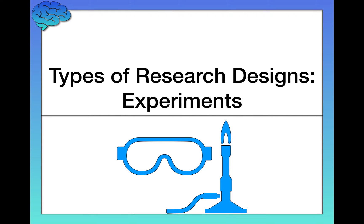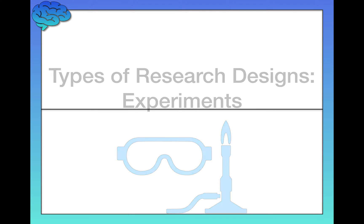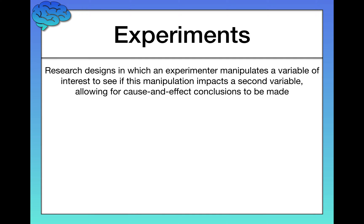In this video, we're going to learn about the fourth and final major research design that psychological scientists use: experiments. Experimental designs are unique in that they allow you to finally draw cause and effect conclusions about what you're seeing. Experimental designs are research designs in which an experimenter manipulates a variable of interest to see if this manipulation impacts a second variable.